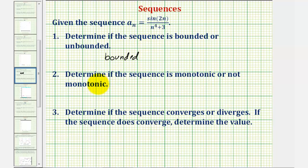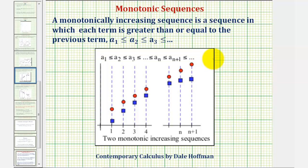Next, we want to determine if the sequence is monotonic or not monotonic. A sequence is monotonic if the terms in the sequence are always increasing or always decreasing. A monotonically increasing sequence is one in which each term is greater than or equal to the previous term. We can also have monotonically decreasing sequences, both of which are called monotonic sequences.